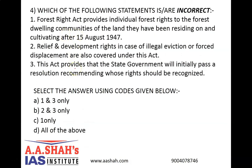Question number 4. Which of the following statements is or are incorrect? 1: Forest Rights Act provides individual forest rights to the forest dwelling communities for land they have been residing on and cultivating after 15 August 1947. 2: Relief and development rights in case of illegal eviction or forced displacement are also covered under this act. 3: This act provides that the state government will initially pass a resolution recommending whose rights should be recognized. Select the answer using the codes given below. A: 1 and 3 only, B: 2 and 3 only, C: 1 only, or D: all of the above.